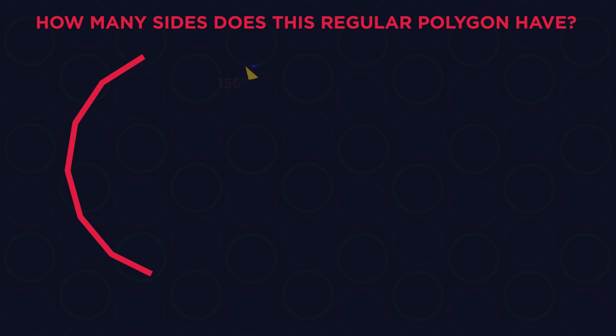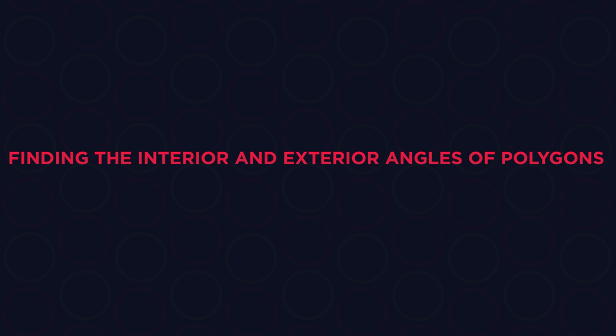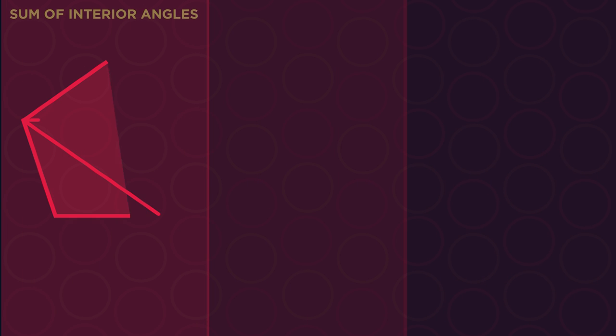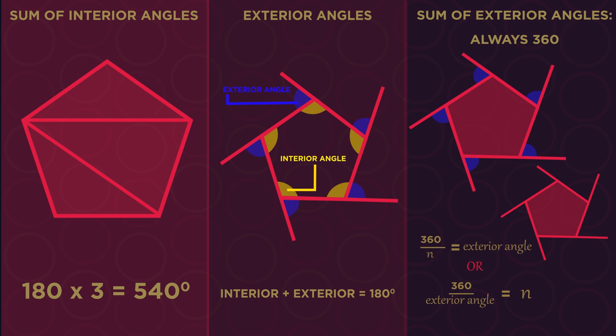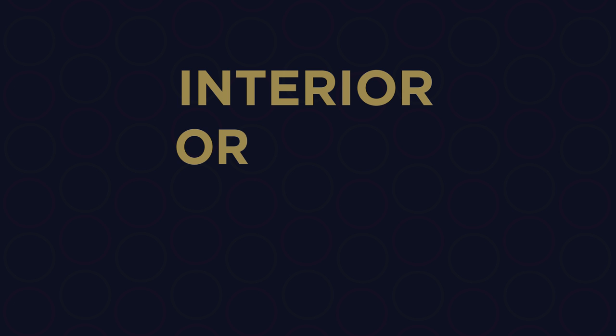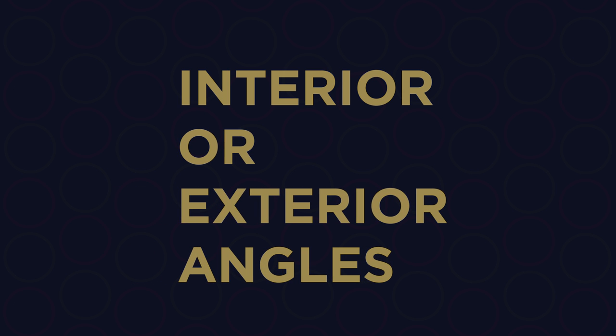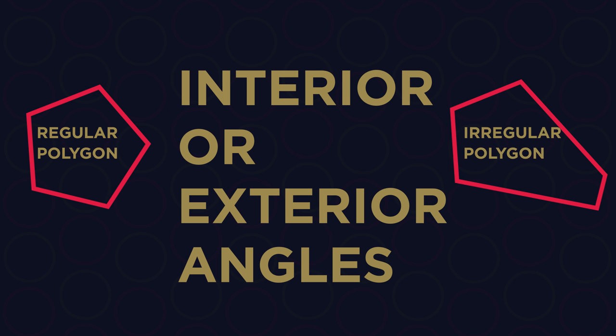So there we have finding the interior and exterior angles of polygons. For the sum of interior angles, you subtract 2 from the number of sides and multiply it by 180. You can always fit two less triangles in. Exterior angles always make 180 degrees with the interior angle. And exterior angles always add up to 360 degrees. Combining knowledge of all of these facts, we can work out any interior or exterior angles. Just make sure if it's a regular or irregular polygon first.